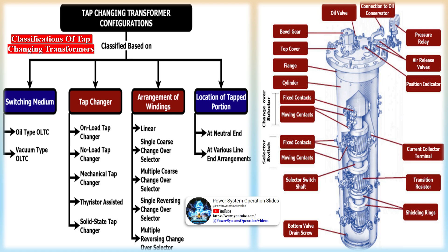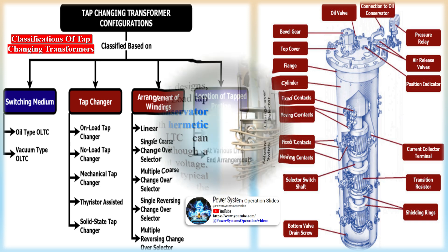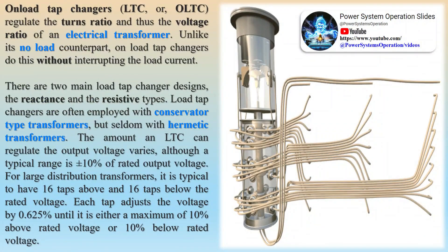The demand for continuous supply doesn't allow disconnecting the transformer from the system for off-load tap changing; hence on-load tap changers are preferred in the majority of power transformers. Two conditions must be fulfilled while tapping: the load circuit should be intact to avoid arcing and to prevent contact damage, and while adjusting the tap, no part of the windings should be short-circuited.